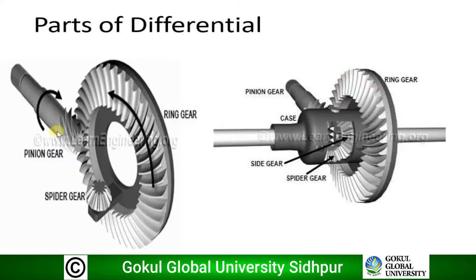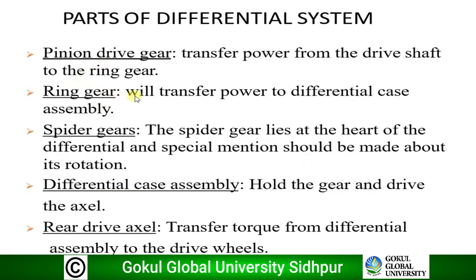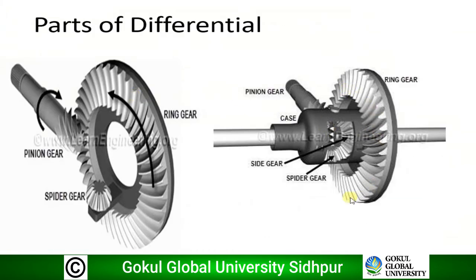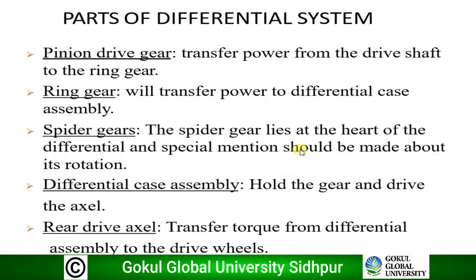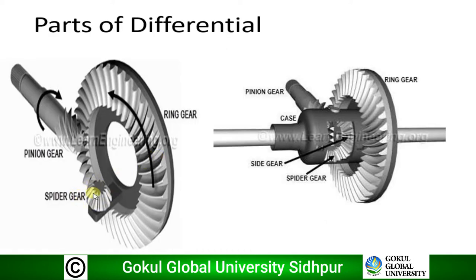The pinion gear receives power from the drive shaft and transfers it to the ring gear. The second part is the ring gear, which transfers power to the differential case assembly. The ring gear receives power from the pinion gear and transfers it to the case assembly. The darker portion shown is the case assembly.